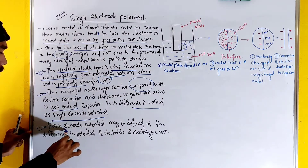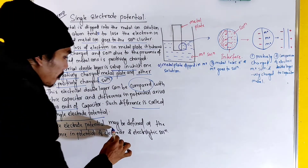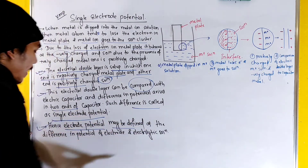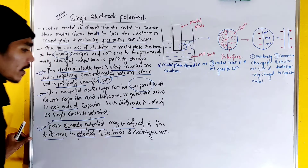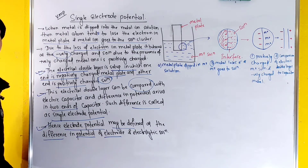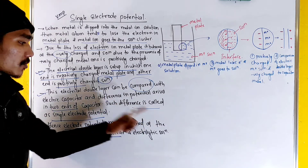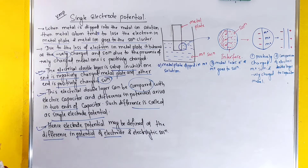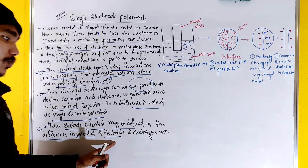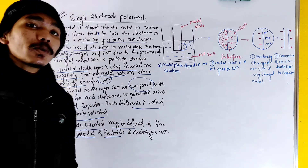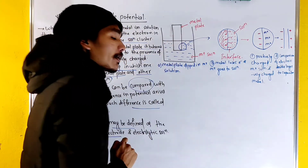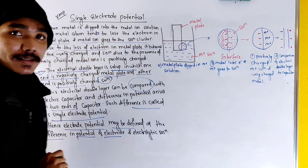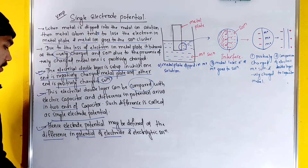Hence, electrode potential may be defined as the difference in the potential of the electrode and the electrolytic solution. This is the definition of single electrode potential.